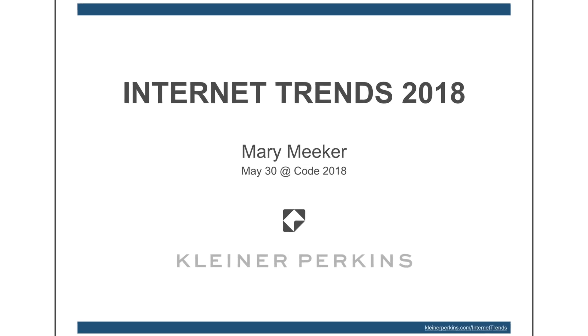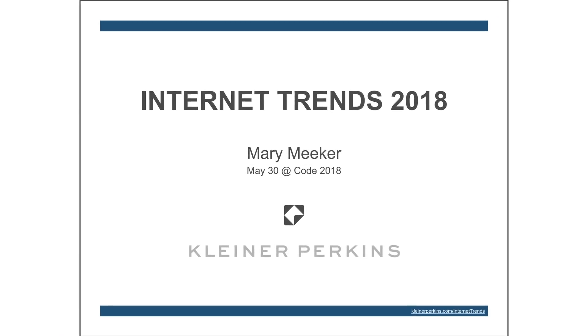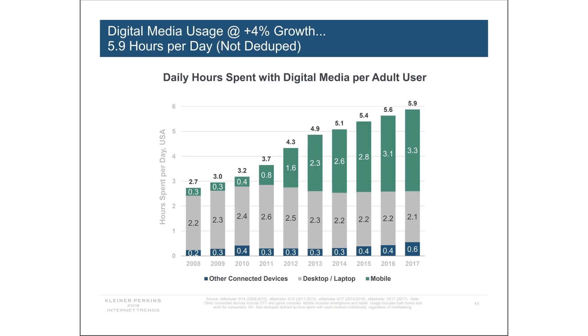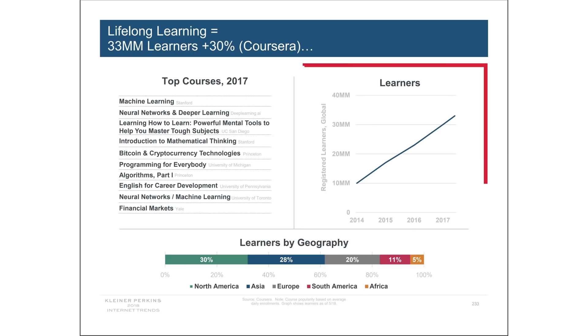There's one slide deck which we anticipate the most every single year. Thanks to Peter for sharing Mary Meeker's new Internet Trends Report 2018. In it you'll find out that the average US adult now spends six hours online per day, an approximation of Facebook's annualized revenue per daily user, and that lifelong learning has become an integral part of anybody's career. Check out the slide deck — it's really long but you can choose some data that's relevant for you.